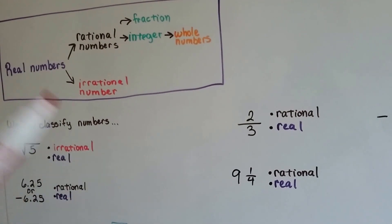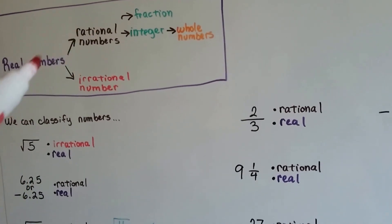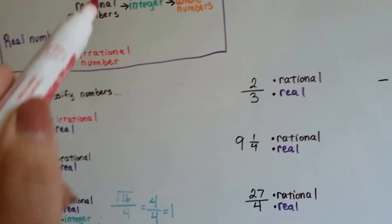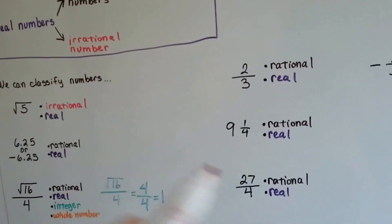9 and 1 fourth. That's a rational and real number. 27 fourths. 27 fourths. That's rational and real and a fraction.